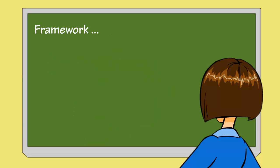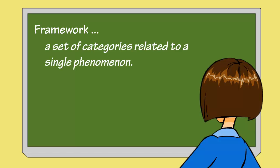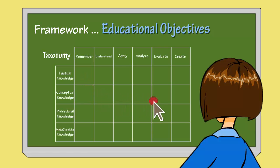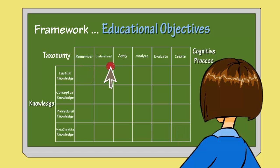A framework can be thought of as a set of categories related to a single phenomenon. In our case, that phenomenon is educational objectives. That framework will be categorized by an organizing set of principles. A taxonomy is a special kind of framework which works across a continuum. Anderson and others have developed their taxonomy around two dimensions: cognitive process and knowledge. They created a table using cognition categories in the columns of the table and knowledge categories in the rows of the table.